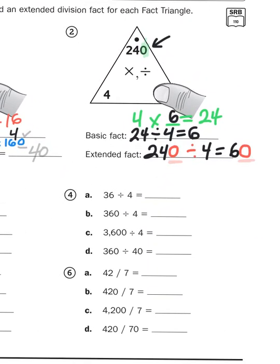You'll notice that problem 4 has 4 parts that all look very similar. 36 divided by 4, 360 divided by 4, 3,600 divided by 4, and then 360 divided by 40.